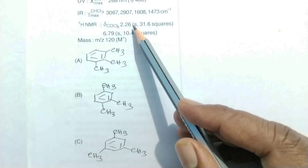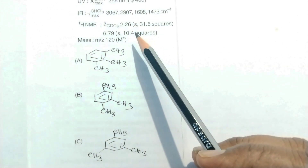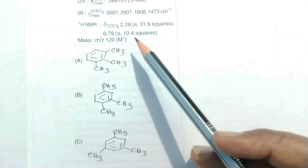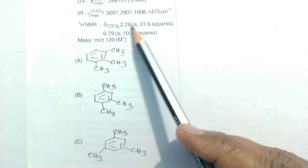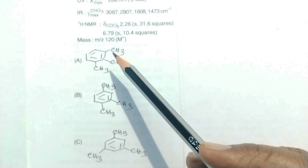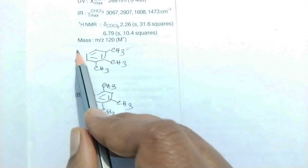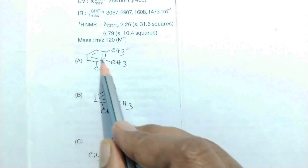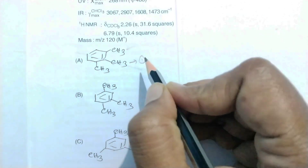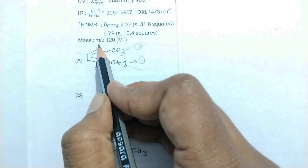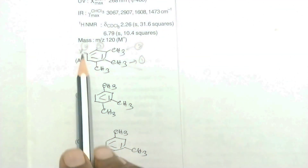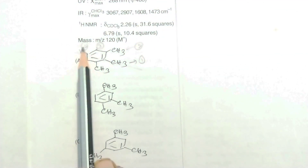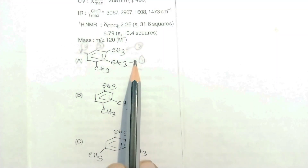In the proton NMR, the spectrum has two signals, meaning there are only two different types of protons — each type is chemically equivalent. Looking at structure one, it has different types of protons: one type gives one signal, another type gives a second signal, a third type gives a third signal, and a fourth type gives a fourth signal. All four hydrogens are chemically non-equivalent, giving four signals.